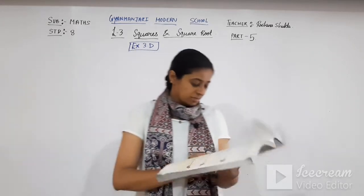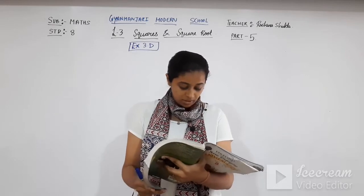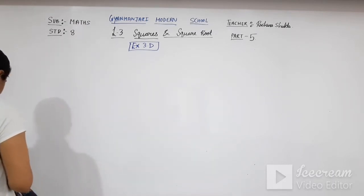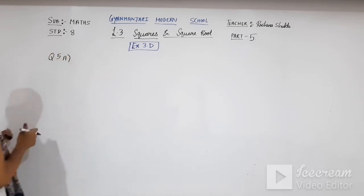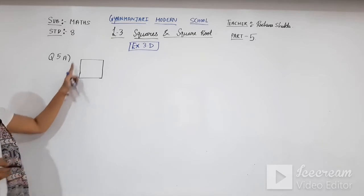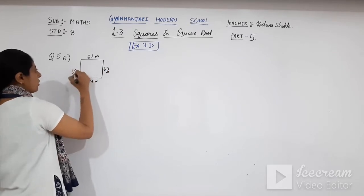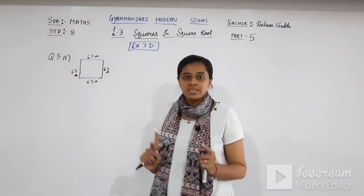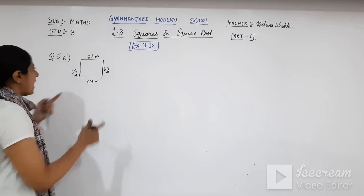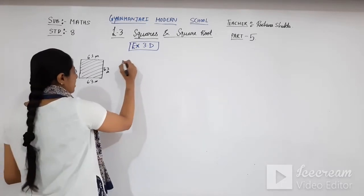Reading question number 5A from the textbook: the length of each side of a square field is 63 meter. What is the area of the field? In a square, all the sides are the same — 63, 63, 63 and 63. Now you have to find the area, which means the inner portion of the square field.